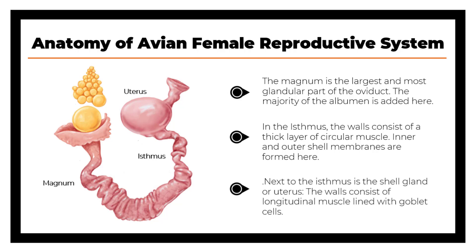Next to the isthmus is the shell gland or uterus. The walls consist of a longitudinal muscle lined with goblet cells. The egg takes up salt and water into the albumen and the shell membranes become calcified. Calcification occurs for about 15 hours and pigmentation is added during the final 5 hours.